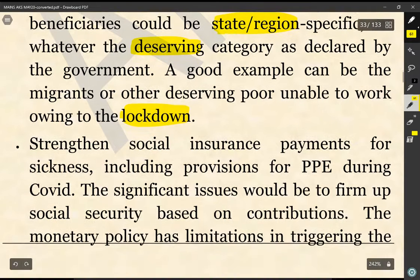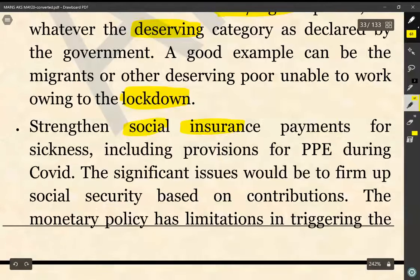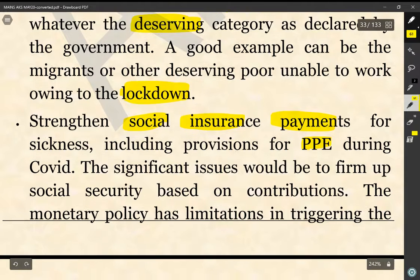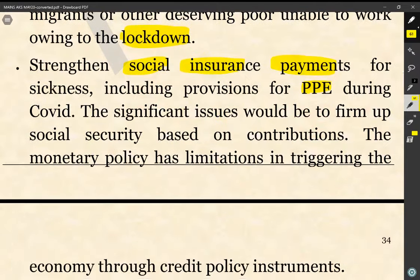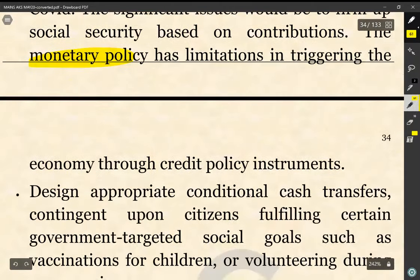Next, as a long-term measure, there should be a strengthening of social insurance payments for sickness, including provisions for PPE during COVID. The significant issue would be to firm up social security based on contributions. The monetary policy has limitations in triggering the economy through credit policy instruments — the RBI indulges in monetary policy instruments but there is limited efficacy to this. The author suggests that long-term social security measures need to be provided.